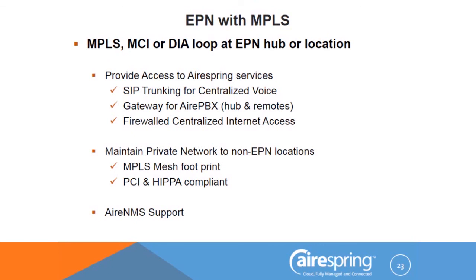If we bring in a managed access for AirPBX, those remote Layer 2 phones can be our hosted phones — they come back to the hub and back to us over that loop. If it's centralized Internet with our firewall service, our routers and firewalls are there, and we can bring all remotes back through. Using MPLS for the access loop keeps the entire network private — that's a plus if we need to maintain total privacy.